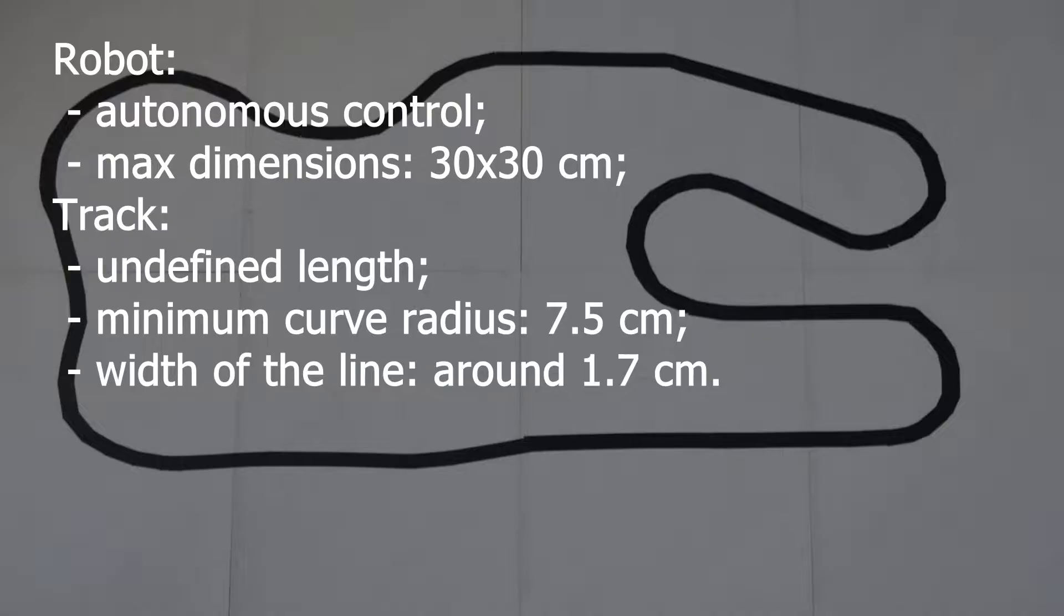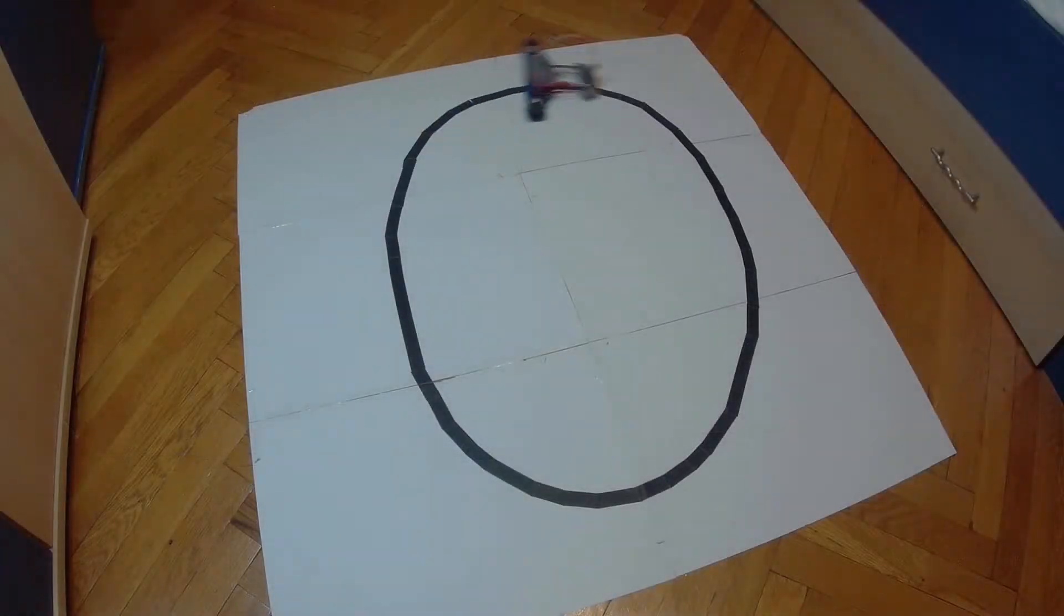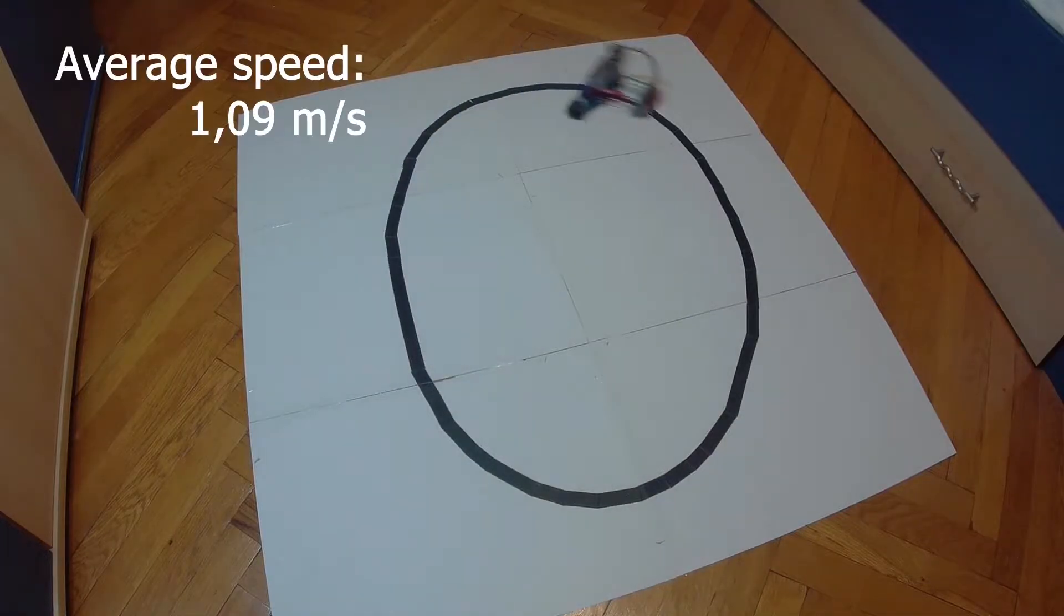Therefore, to follow these rules and stay on the given track, the robot's motors don't run at full rate, but rather at 60%. In the context of this track, which has a length of 188 centimeters, the average speed of the robot is 1.09 meters per second.